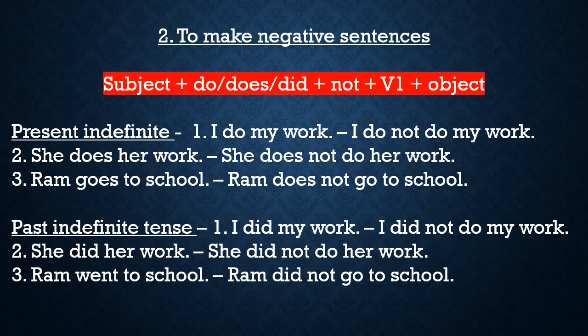Similarly, third example: 'Ram goes to school' — its negative is 'Ram does not go to school.' In past indefinite tense, only did not is used — it doesn't matter whether subject is singular or plural. Past indefinite tense mein sirf did not use hota hai. Ismein karta ek vachan hai ya bahu vachan, issa sahayak kriya par koi asar nahi padta.